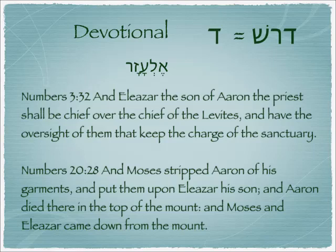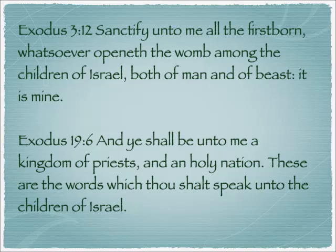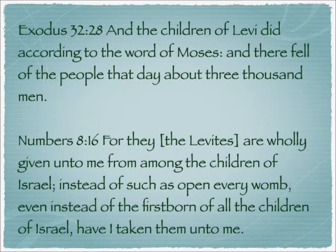Numbers 20:28: 'And Moses stripped Aaron of his garments and put them on Eleazar his son. And Aaron died there in the top of the mount, and Moses and Eleazar came down from the mount.' Now initially the Levites were not to have been the priests at all, but the firstborn were to have been the priests. In Exodus 3:12: 'Sanctify unto me all the firstborn, whosoever openeth the womb among the children of Israel, both of man and of beast, it is mine.' And again in Exodus 19:6: 'And ye shall be unto me a kingdom of priests and a holy nation.'